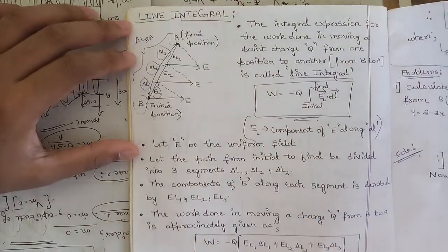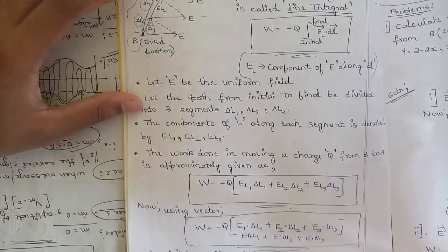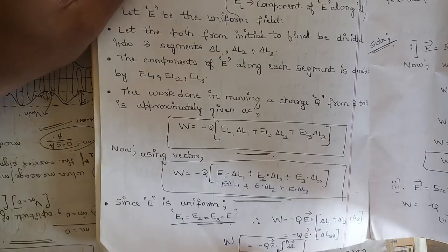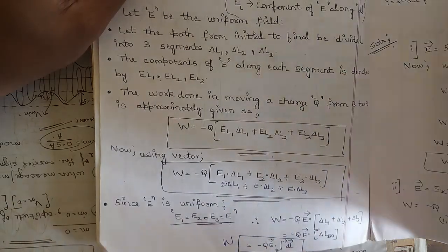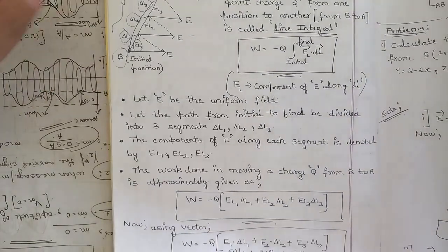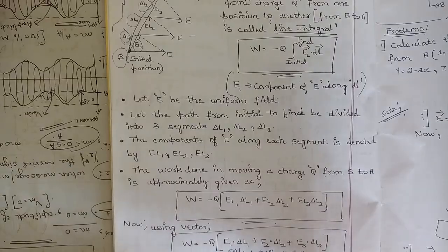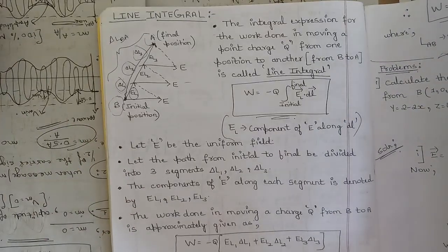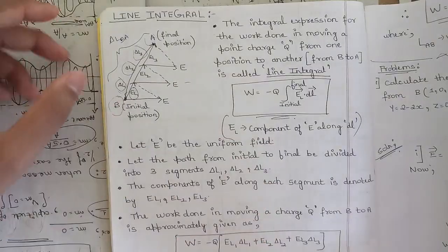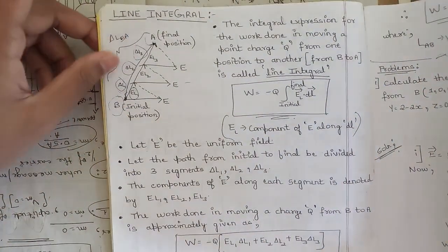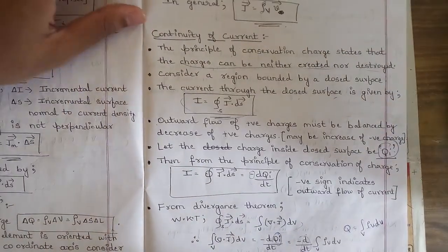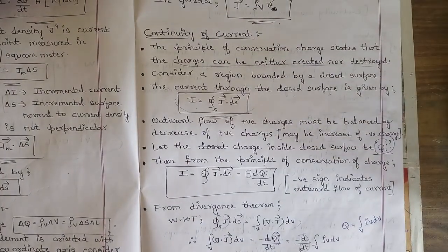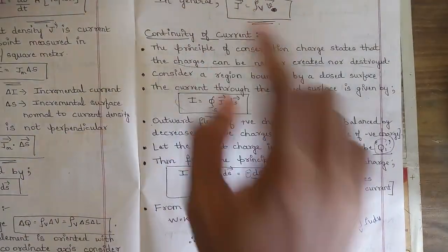One more important concept in Module 2 is the line integral — the derivation of work done in moving a single point charge. The relationship is W = −Q ∫(B to A) E · dl. This derivation is available separately in our channel. It is a question repeated multiple times and may be asked for seven to eight marks. Pictorial representation and all mathematical equations are necessary.